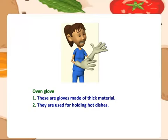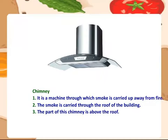Oven glove — these are gloves made of thick material. They are used for holding hot dishes. Chimney — it is a machine through which smoke is carried up away from fire.